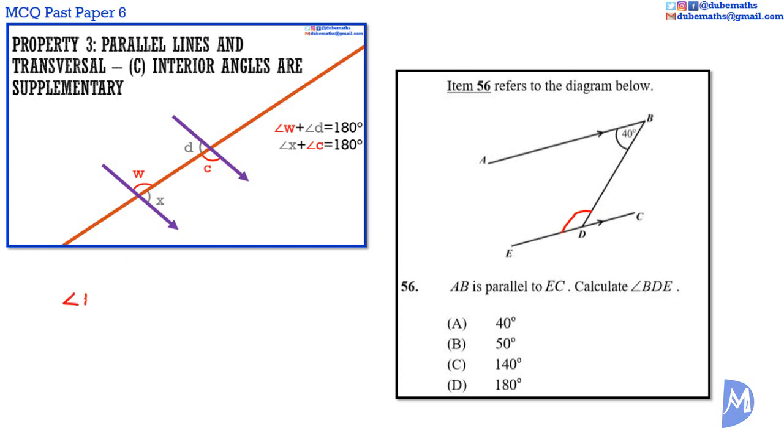Therefore, angle ABD added to angle BDE is equal to 180 degrees. We are given that angle ABD is equal to 40 degrees. So, 40 degrees added to angle BDE is equal to 180 degrees. Therefore, angle BDE is equal to 180 degrees minus 40 degrees, which equals 140 degrees. The answer is C.